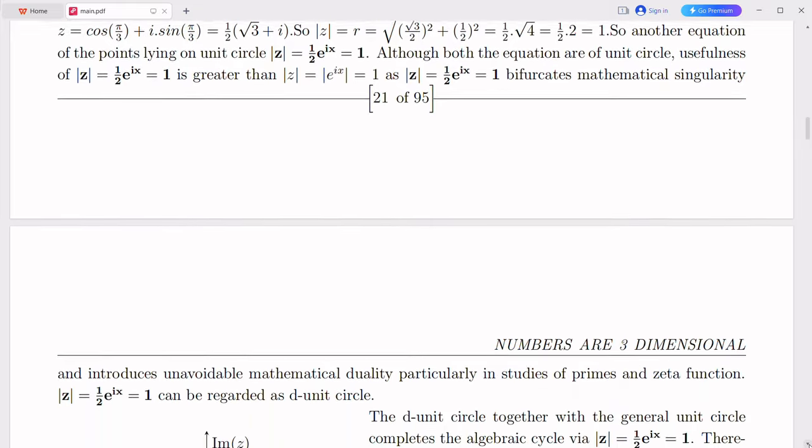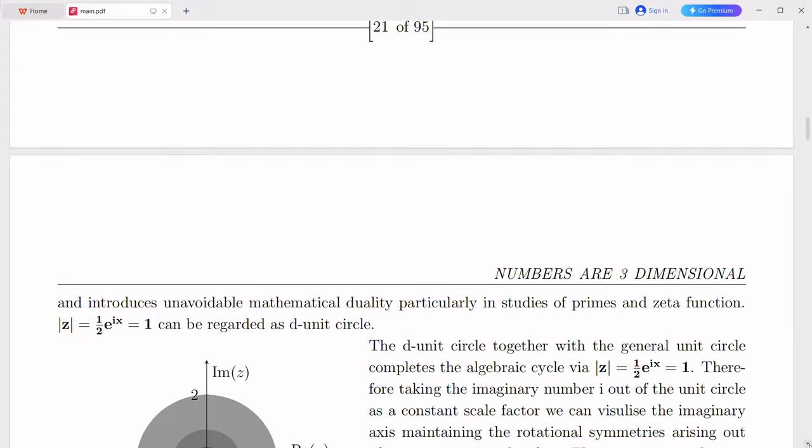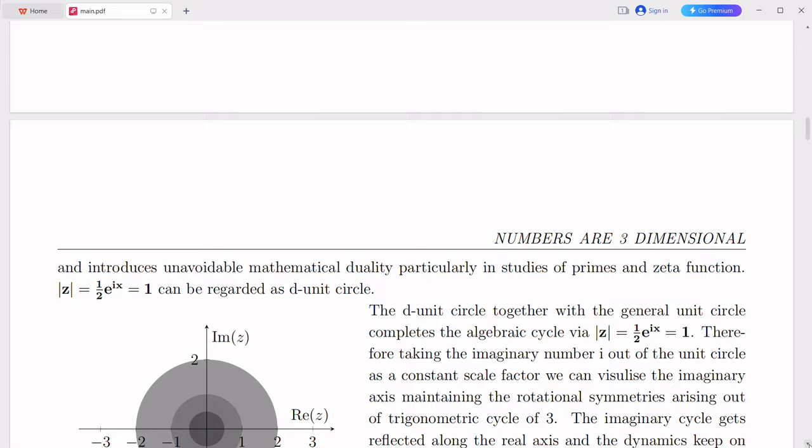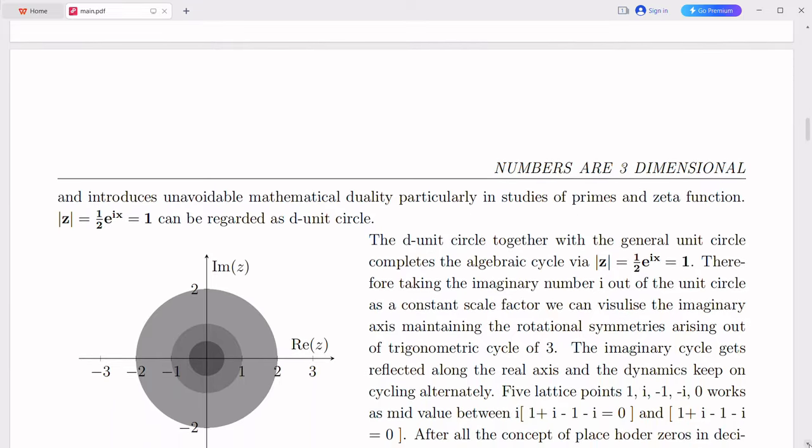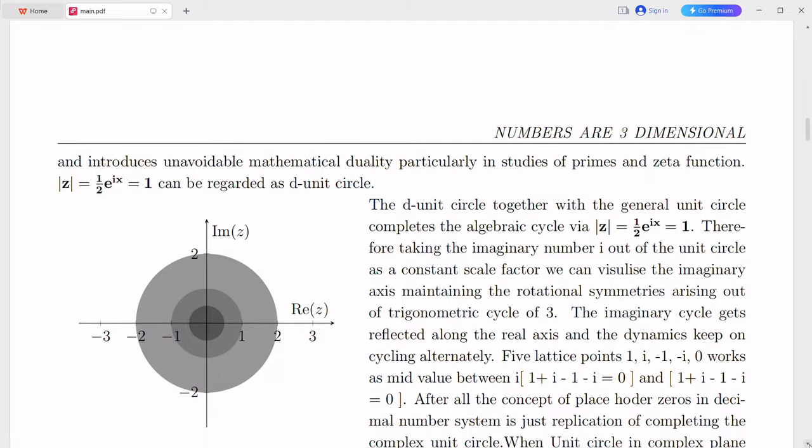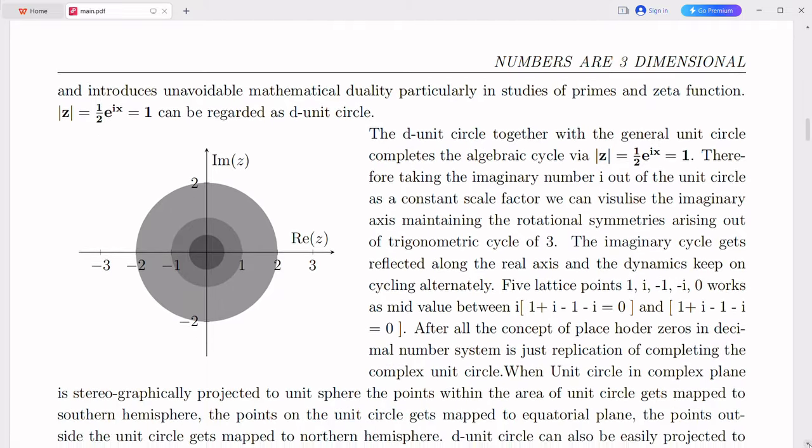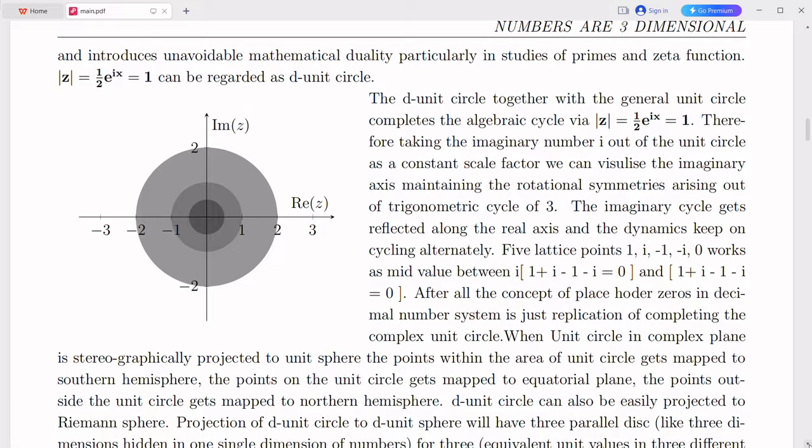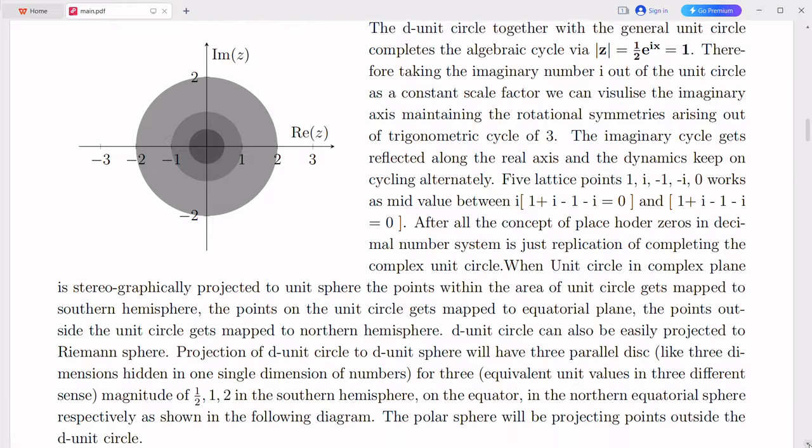As I continued my investigations, I stumbled upon an unexpected relationship between the Riemann zeta function and the fine structure constant. This connection seemed to imply that the behavior of the zeta function at certain critical points could be linked to the fine structure constant, shedding light on the mysterious nature of both. However, I must note that my research is still ongoing, and many of these ideas remain speculative.